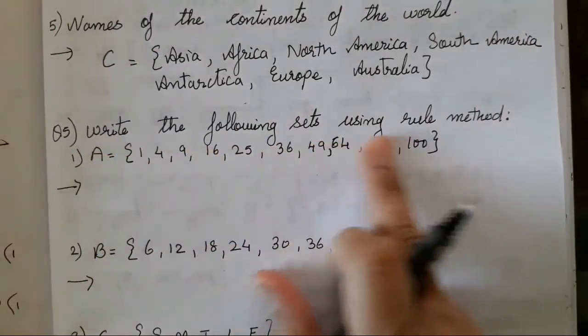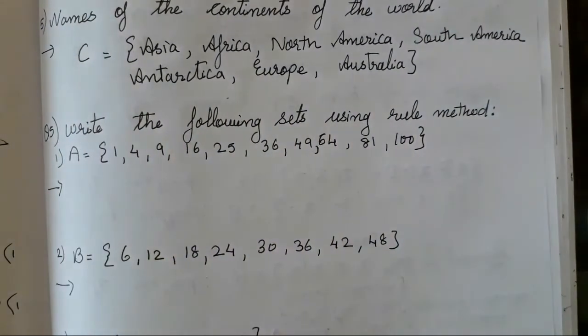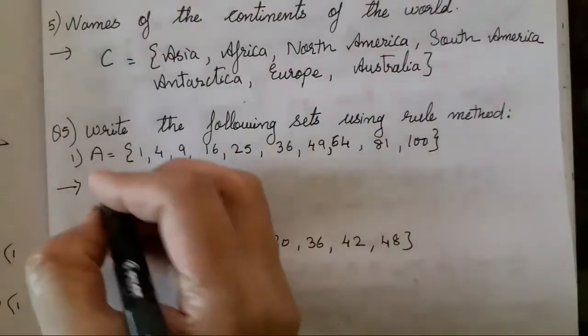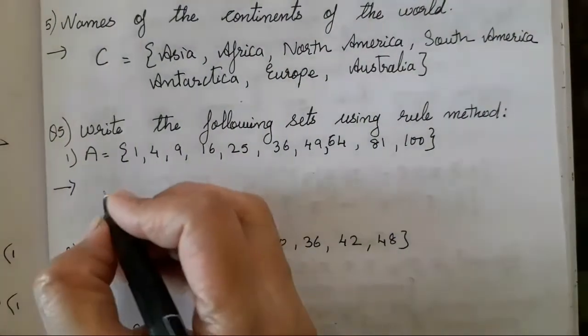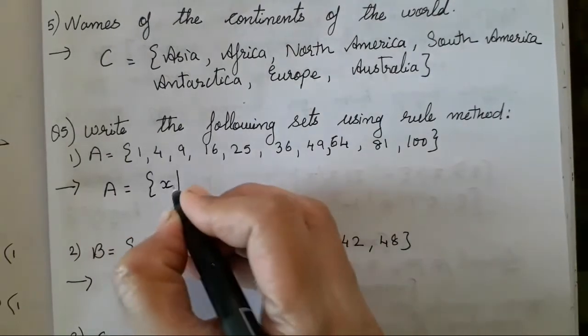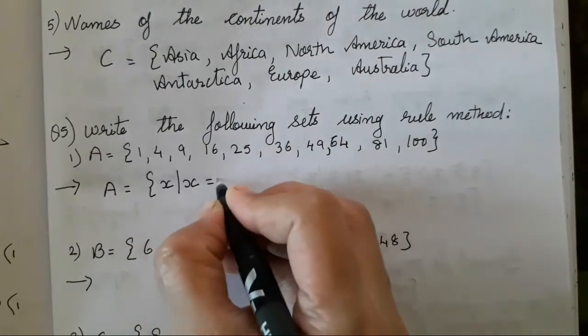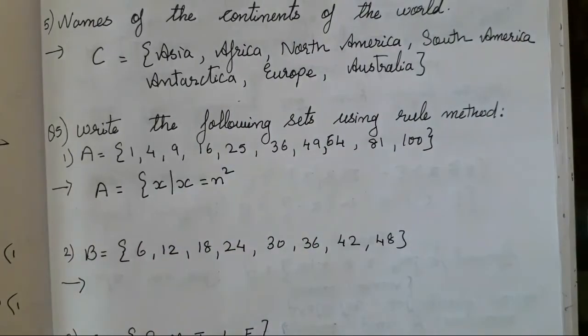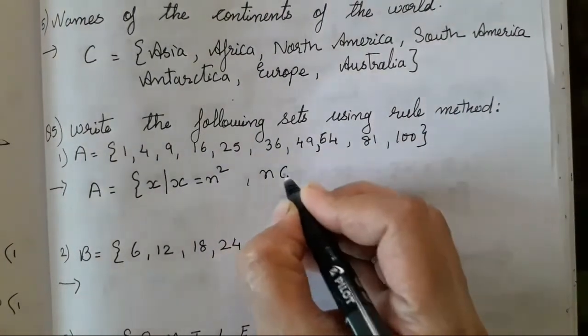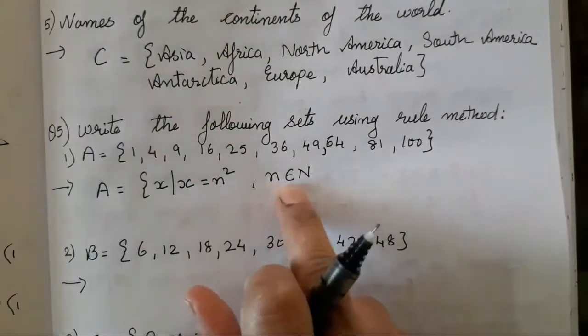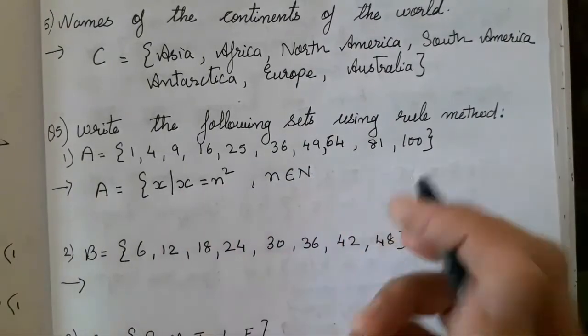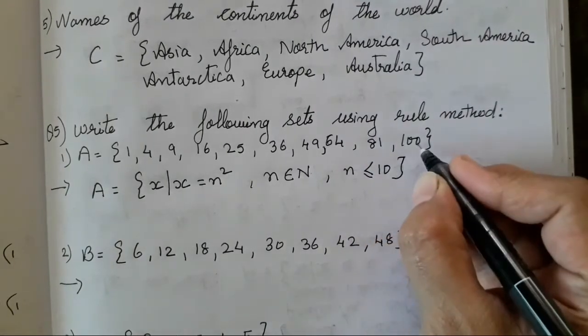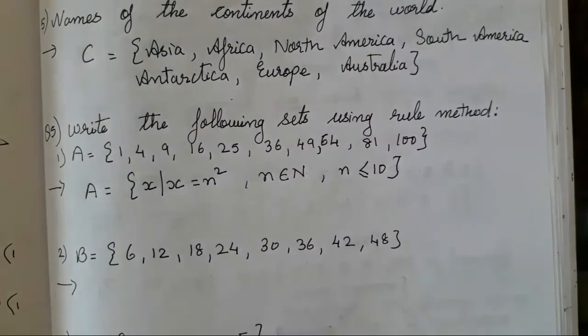Now, the fifth question is write the following set using the rule method. You all have to use rule method over here children. It is going to be a bit difficult because as I said, you all have to observe the start and the end. So first, A is these numbers, observe them and then you all have to write A, X. X is an element such that X is N square. You will see all the numbers are square roots. 2's root 3, 4, 5, 6, 7, 8, 9, 10. So, N are all numbers. N is elements of all numbers. They are square roots. They are elements of natural numbers. And N is greater and equal to 10. Why I have taken 10? Because last is 100, which is a square root of 10. That's it.